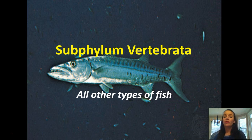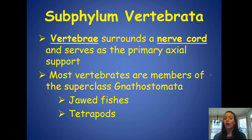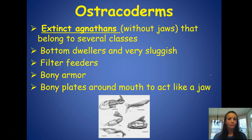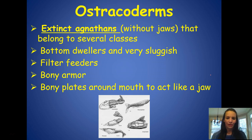Now we get into the actual vertebrates — subphylum Vertebrata, which includes all other types of fish. They have vertebrae surrounding a nerve cord as their primary method of support. Most are members of superclass Gnathostomata, the jawed fishes and tetrapods. There are also extinct astrachoderms — jawless animals belonging to several classes — that were bottom-dwelling, sluggish filter feeders with bony armor and bony plates around their mouths acting like jaws.